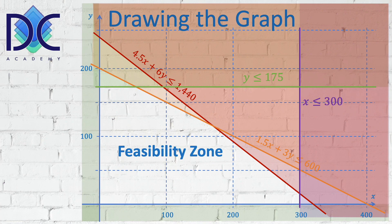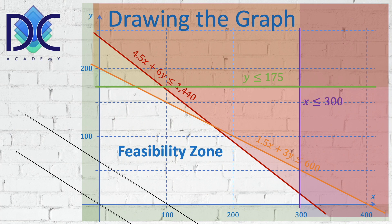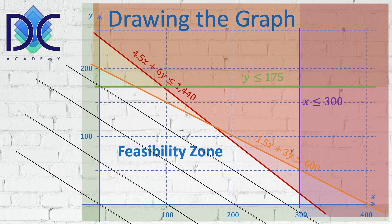When you have that, you can draw the line on the graph. We start in the lowest point, which is at the origin. Here the profit is equal to zero because we are producing nothing — it complies with all the constraints but is basically not a solution we should consider. Then we move the line slowly further. We can see the segment over the feasibility zone, and the profit along this line is constant for all points on the line — this is the equi-profit line.